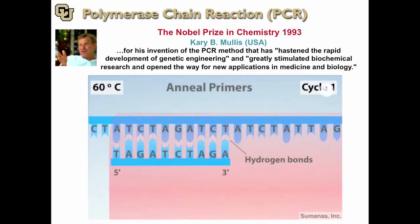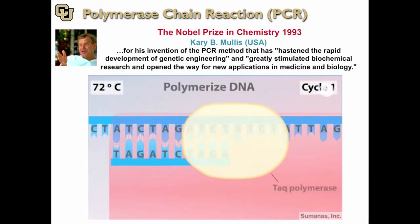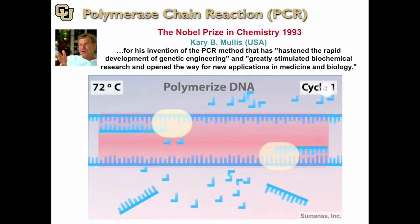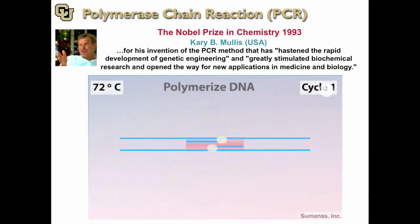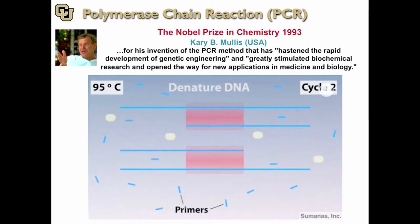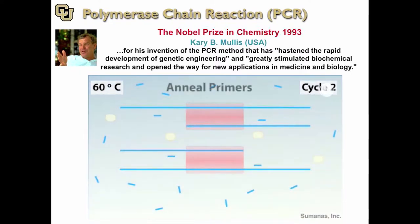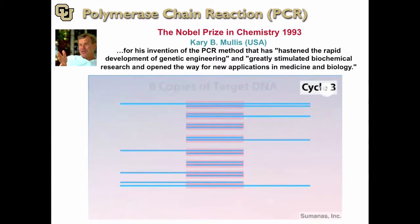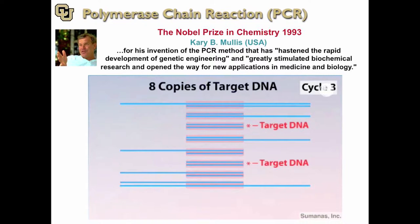In the next phase, the temperature is raised to 72 degrees Celsius. Taq polymerase functions optimally at this temperature and begins polymerization, adding nucleotides to the 3-prime end of each primer attached to the DNA strand. After one complete cycle, there are two double-stranded copies of the target DNA. After a second cycle, there are four copies; after cycle three, there are eight copies of the double-stranded target DNA sequence.